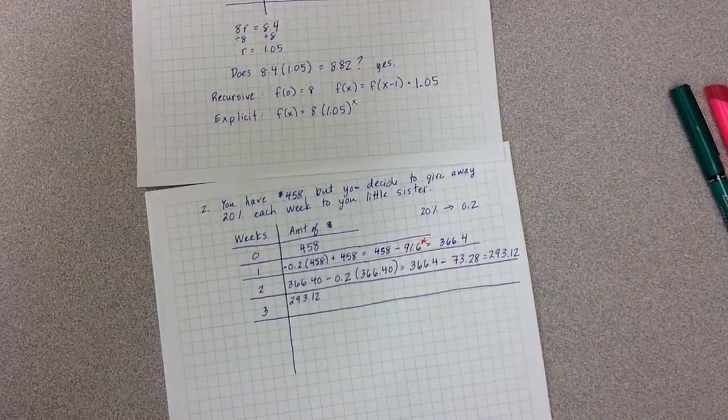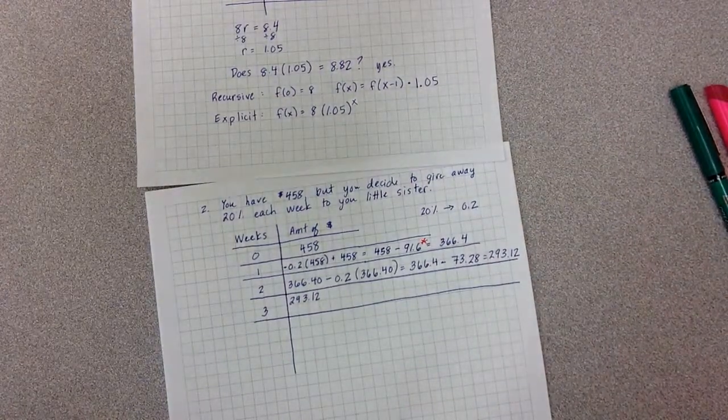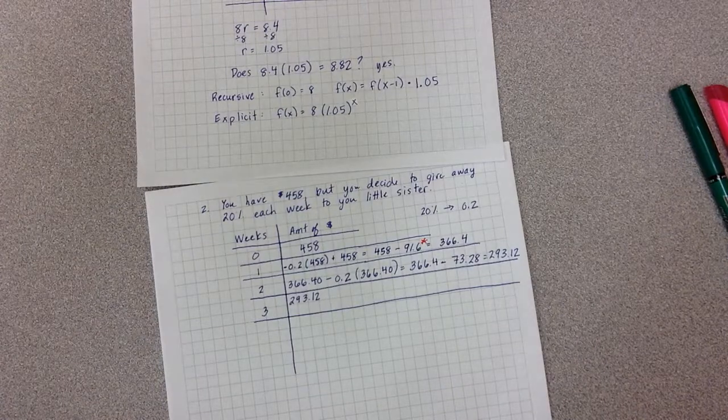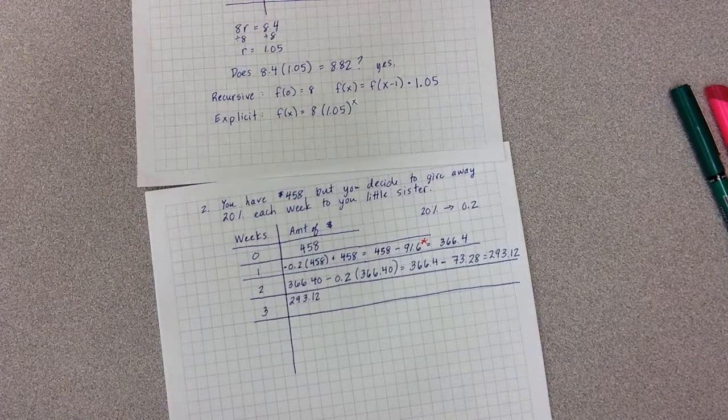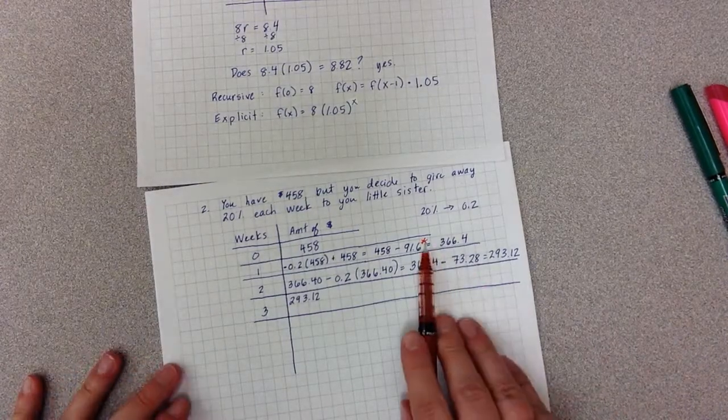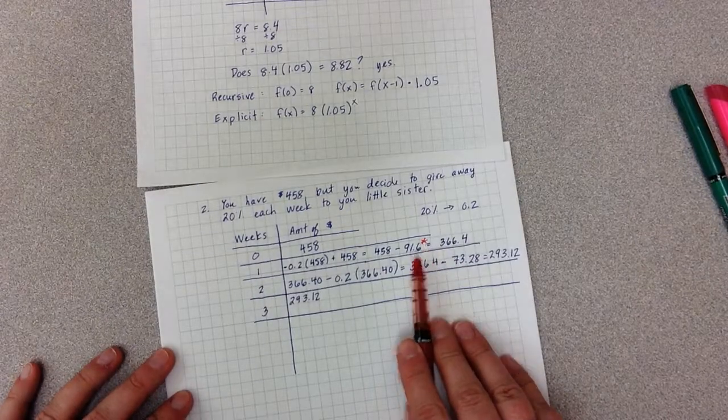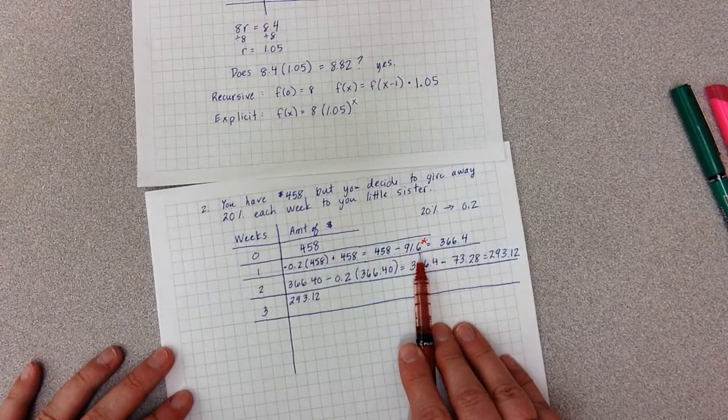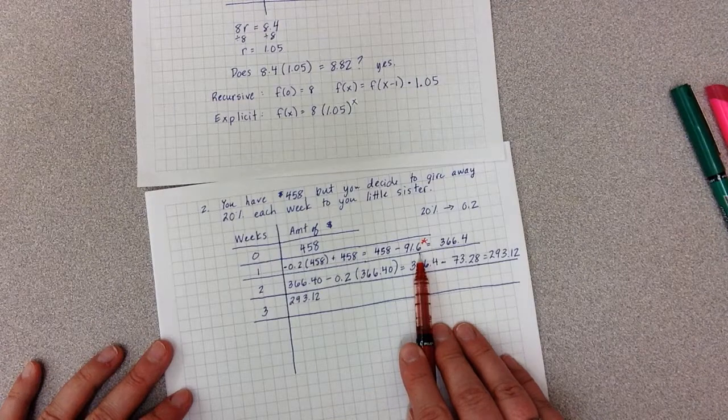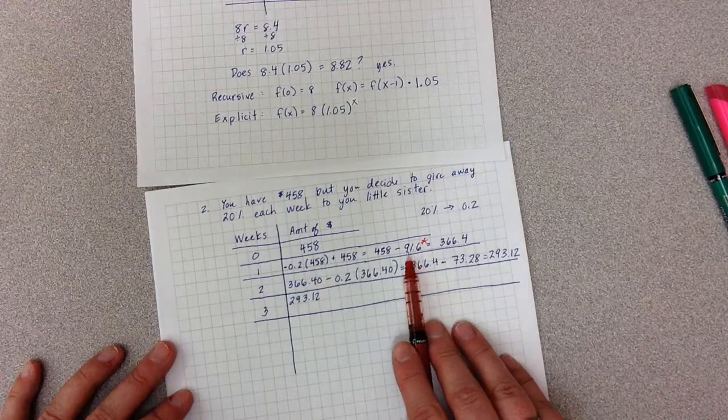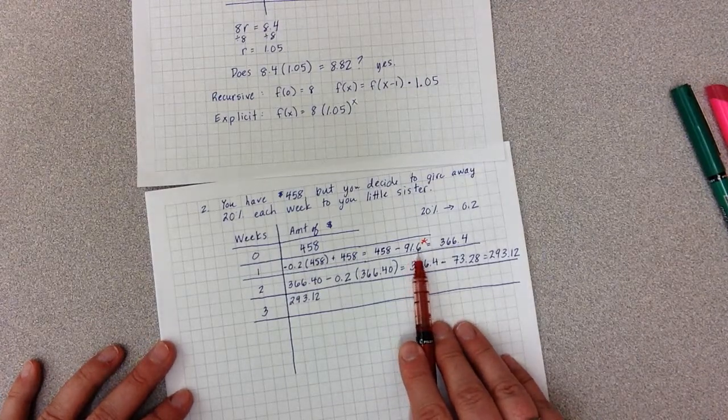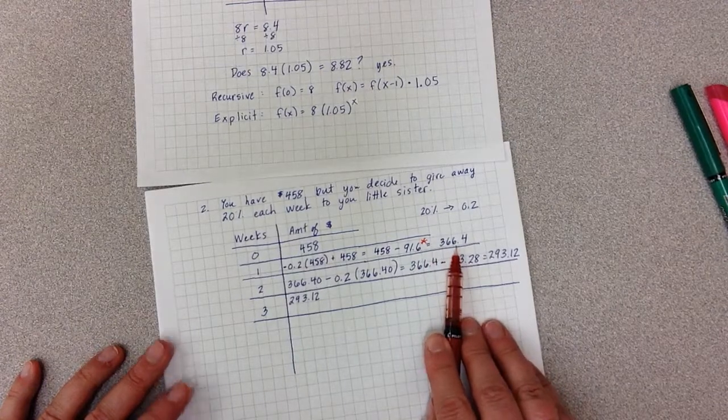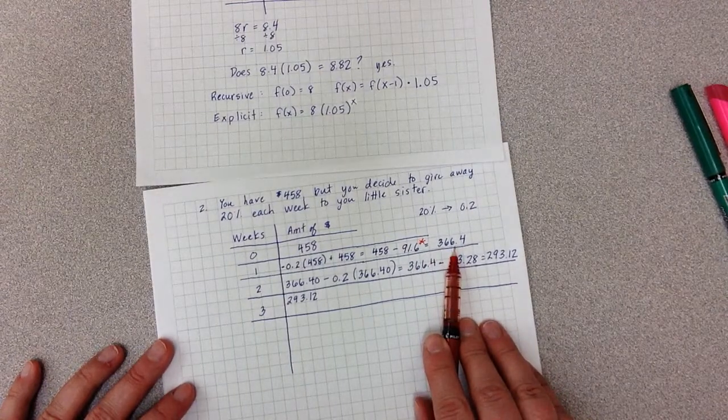This is a continuation of the notes titled Percent Growth or Decrease in 1.7. The previous video cut off right here where we were talking about how much money I was going to hand over to my sister on the very first week, which was $91.60, which left me with $366.40.